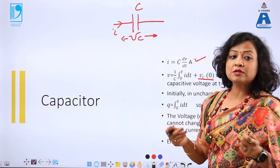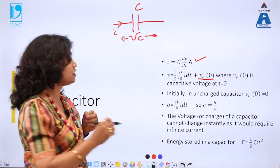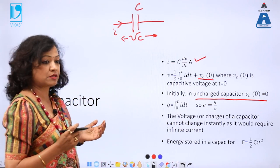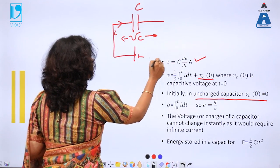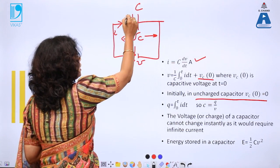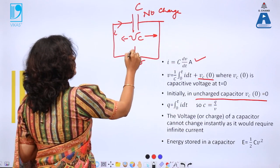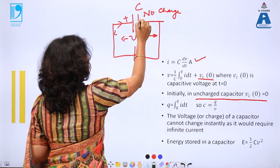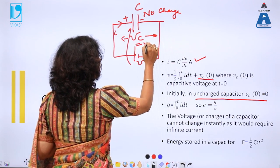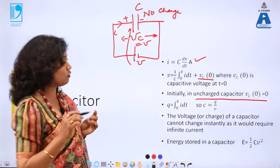At t = 0, the initial voltage Vc₀ is 0 because there is no charge stored in the capacitor. If I connect this capacitor across a battery, initially the current is maximum because there is no charge stored. With time, positive charge accumulates on one plate and negative on the other, and finally the voltage across the capacitor equals the input voltage V.